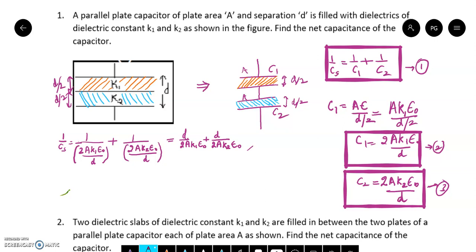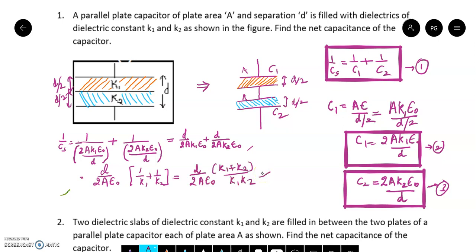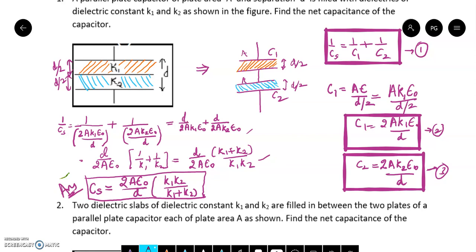I can take D upon 2A·epsilon-naught common, so this equals D upon 2A·epsilon-naught times (1 upon K1 plus 1 upon K2). Now, is this the equivalent capacitance? No — it's the reciprocal of the equivalent capacitance, since we took 1 upon Cs. So the equivalent capacitance Cs equals 2A·epsilon-naught upon D, times K1·K2 divided by (K1 plus K2). This is the answer.